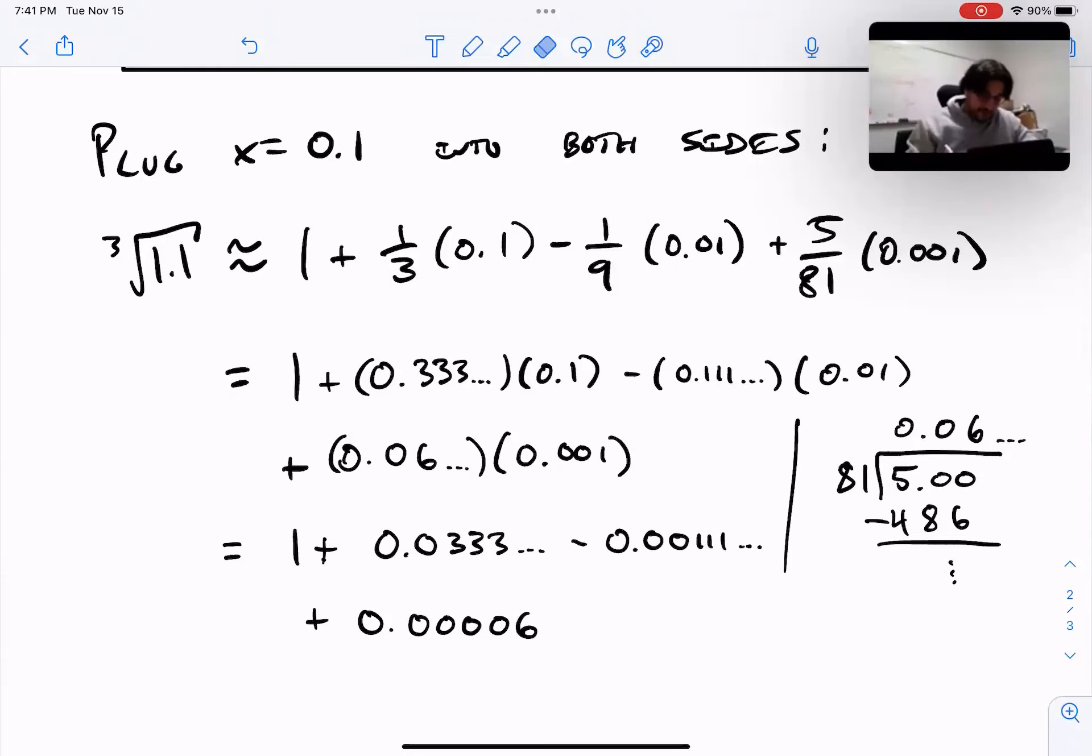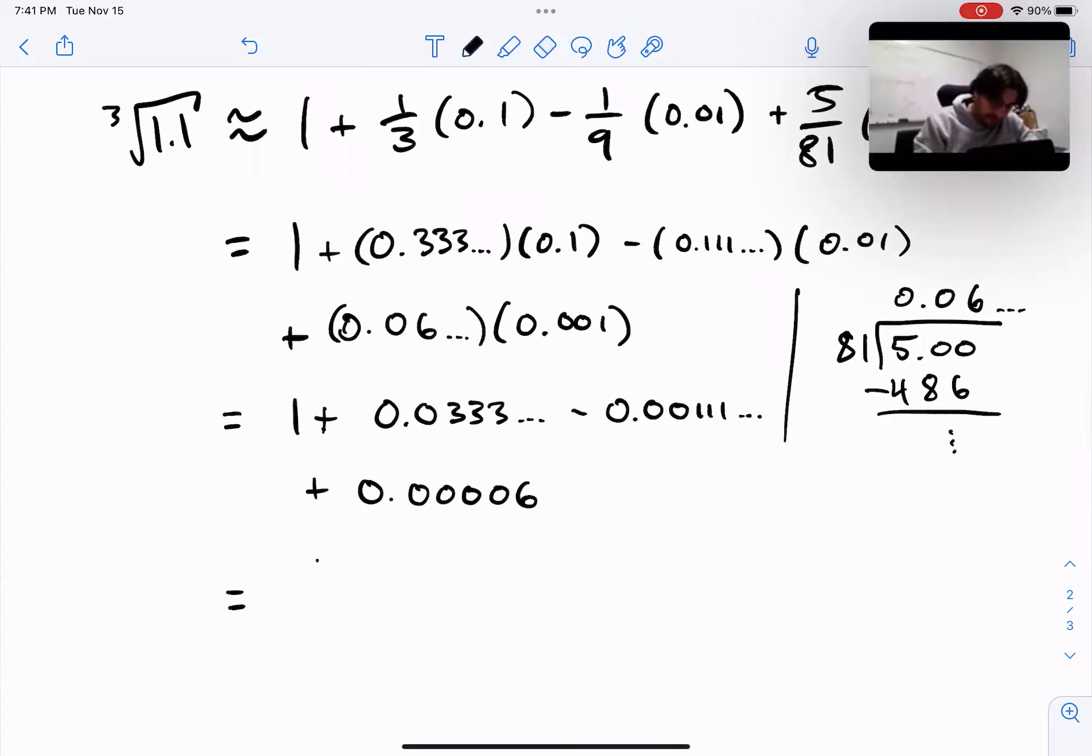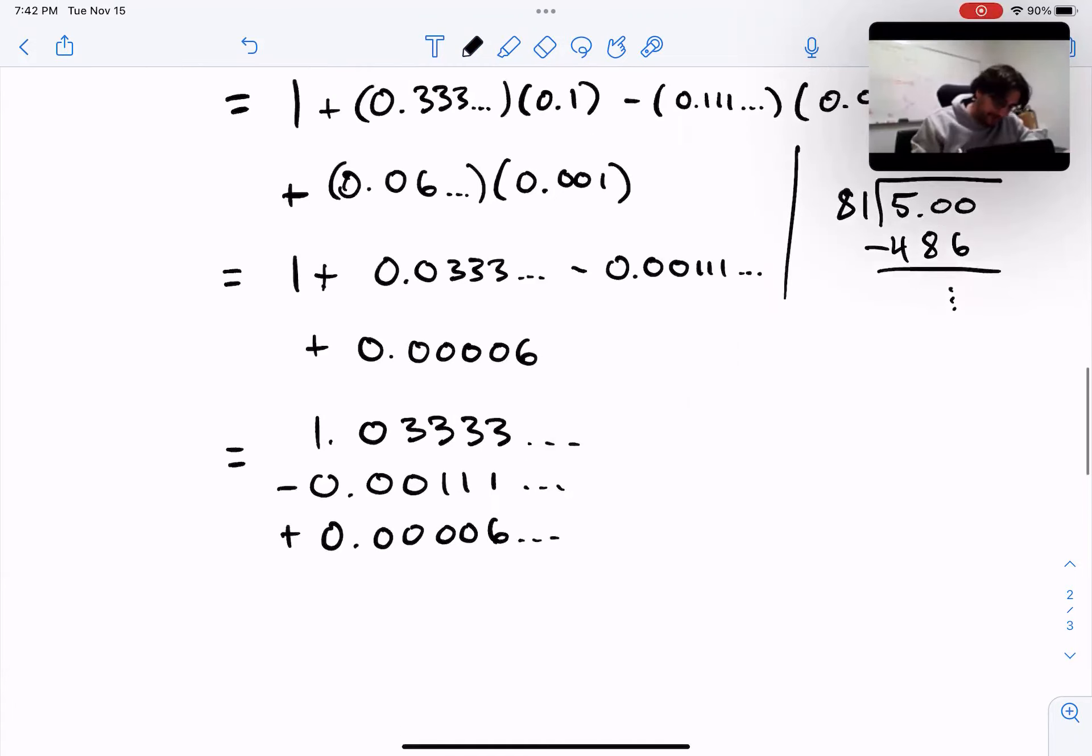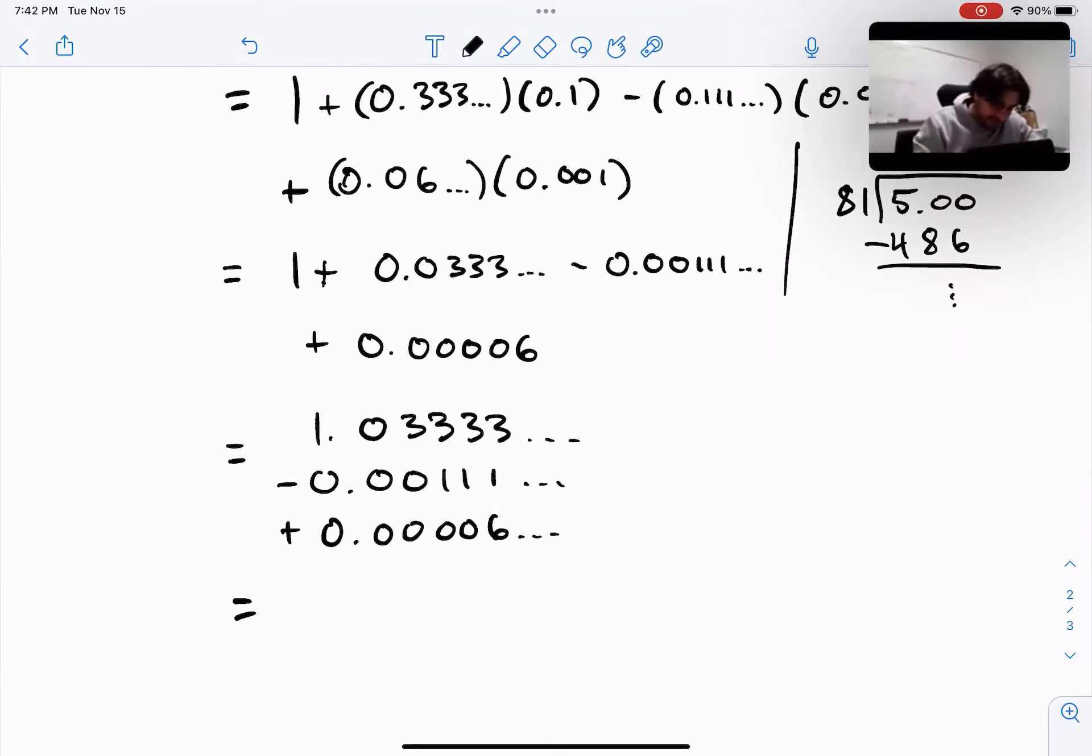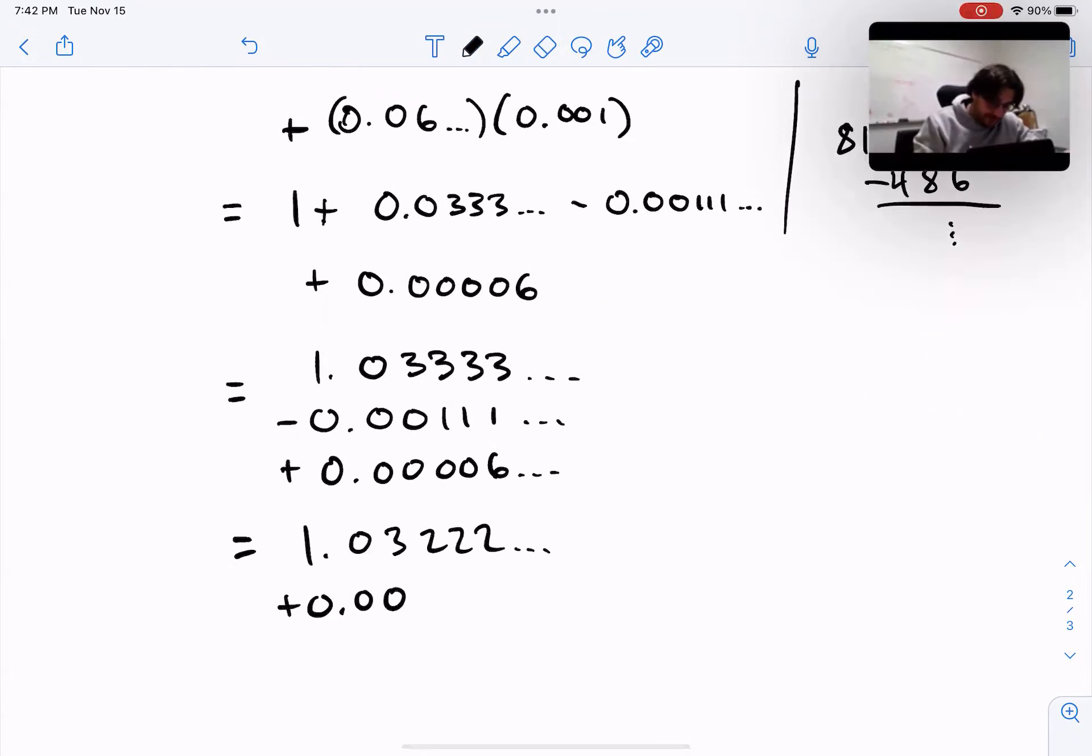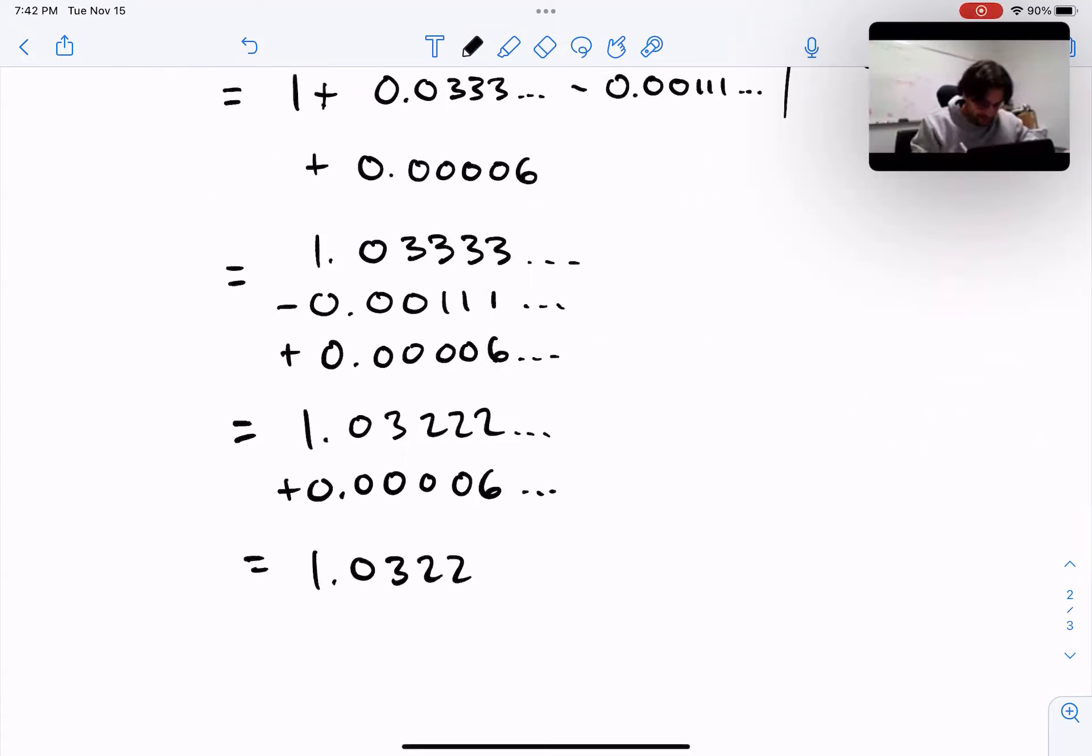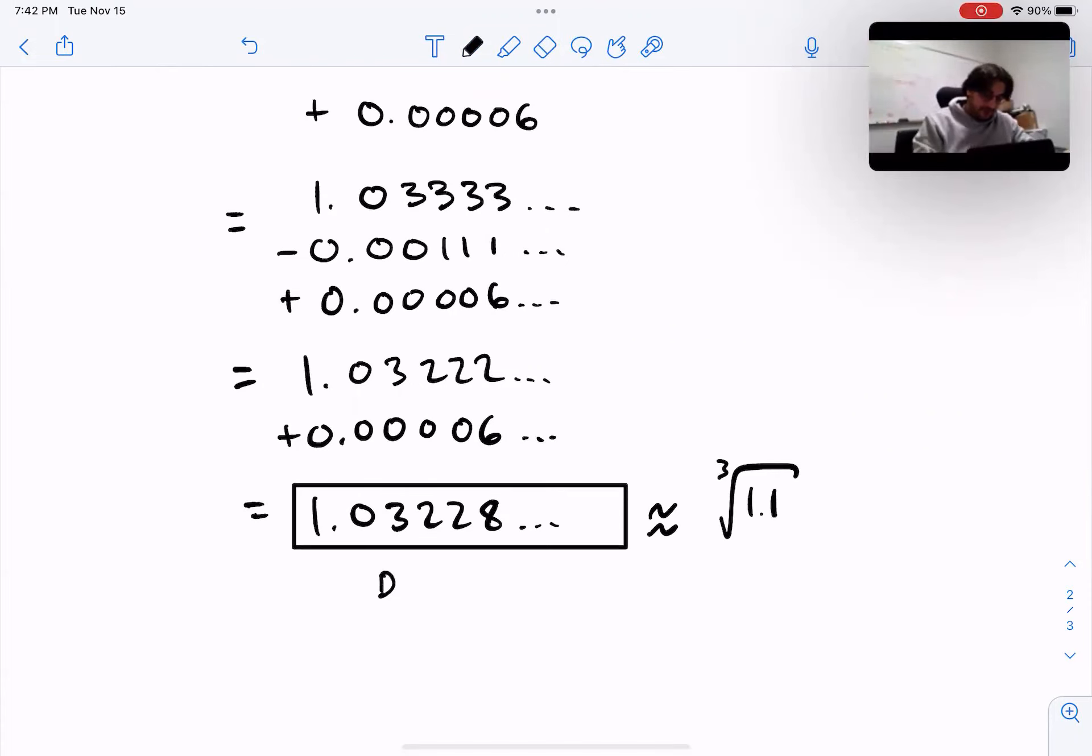What happens from here? I just do the good old arithmetic. So I have 1.0333... and then from that I'm going to subtract 0.00111... and I'm going to add to that 0.00006. I'm just lining those digits up vertically so I can see what it is. When I do the subtraction, I get 0, 3, and then 2s forever. Then I add back in this 0.00006, and that gives me 1.03228, and then it keeps going. So that's my estimate for the value of the cube root of 1.1 using a degree 3 power series.